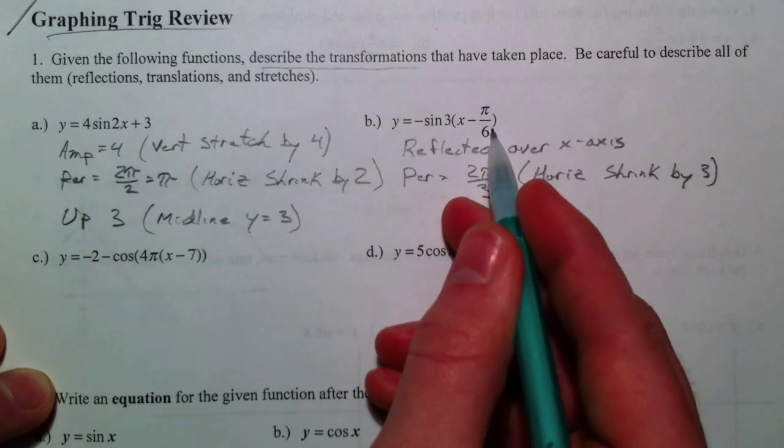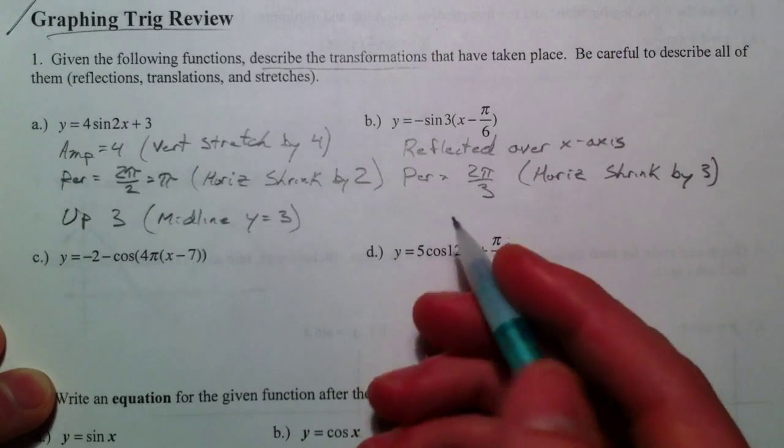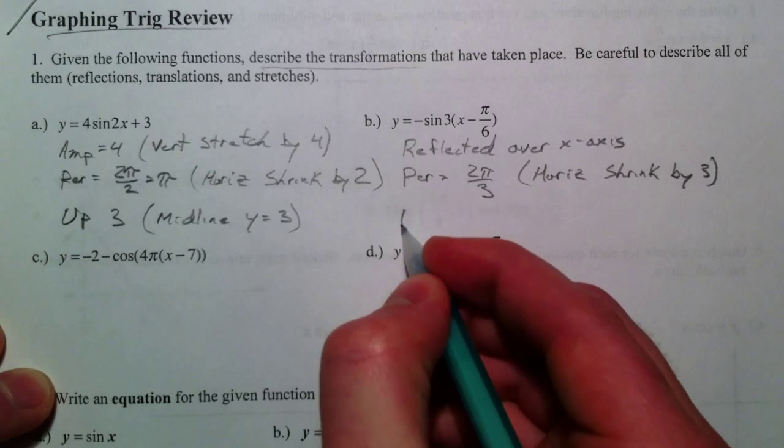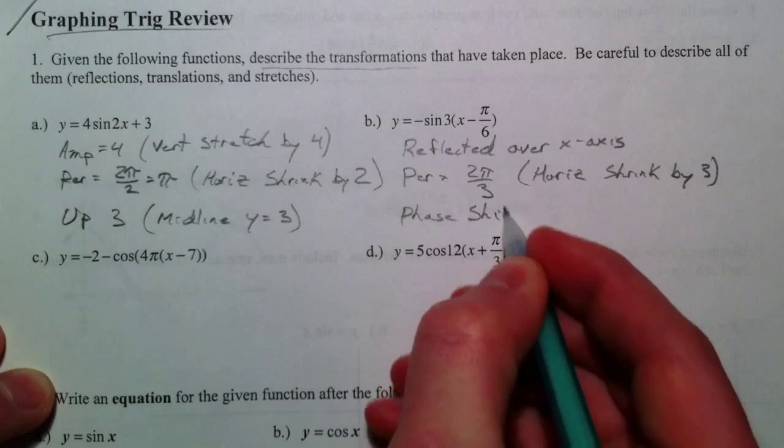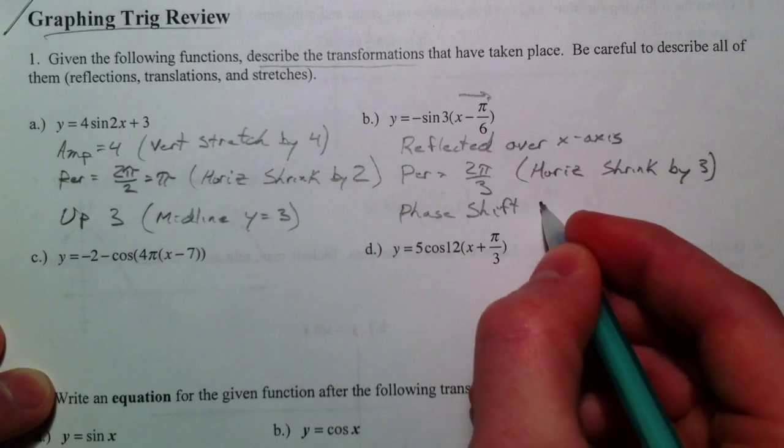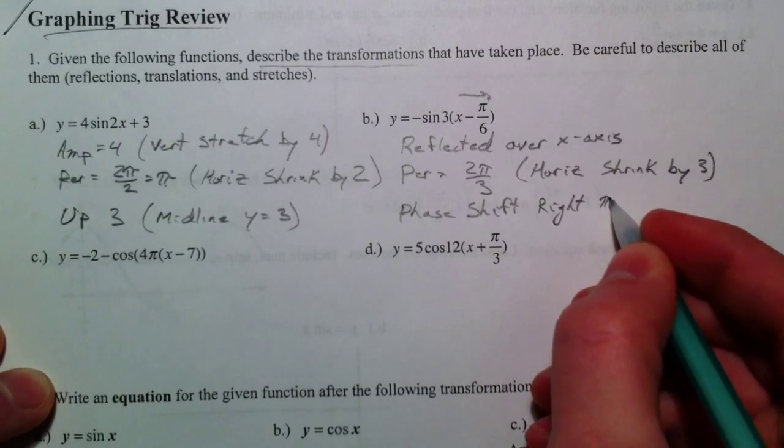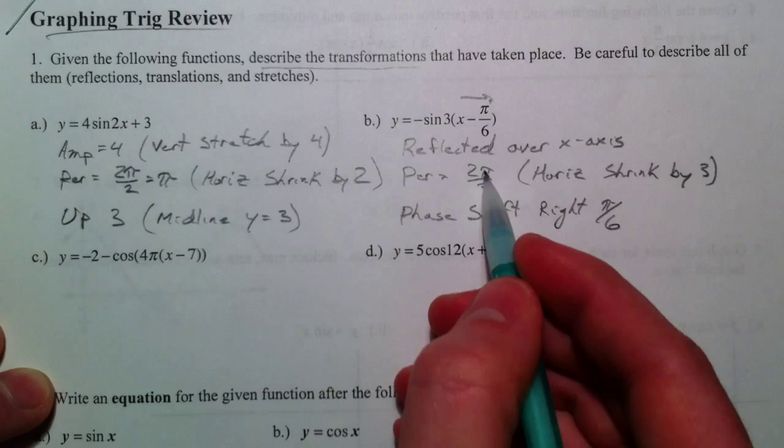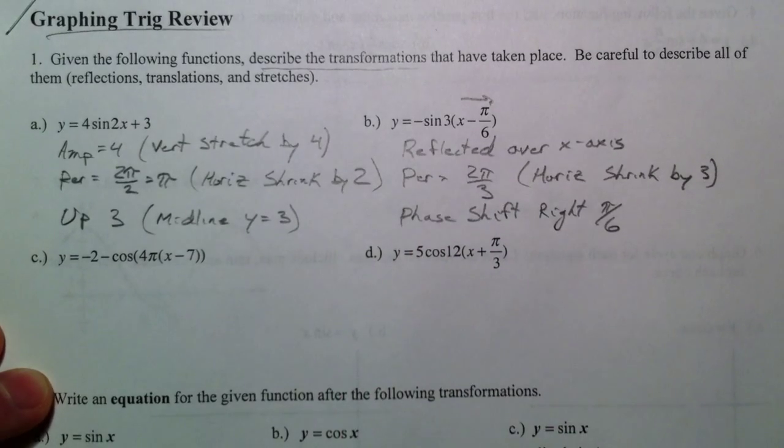And the minus pi over 6, it's with the x, and so it's messing with it horizontally. So we call it a phase shift. And that's moving right pi over 6, because when it's with the x, it always moves the opposite. Just like the 2 pi is divided by the 3 instead of multiplied, the minus pi over 6 moves it to the right.